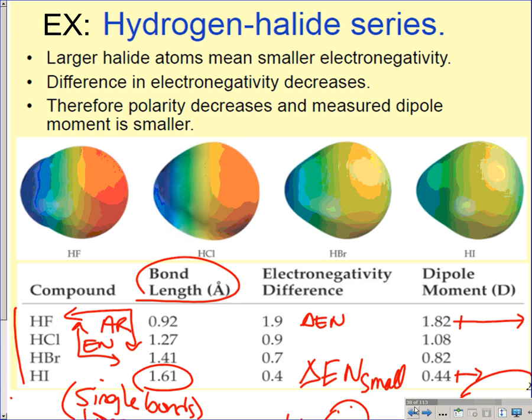The larger the atom, the smaller the electronegativity of that particular atom, which creates a long bond length. The smaller electronegativity difference creates a small dipole moment for the entire molecule. All of these are linear — like HF versus HI — this one has a really large dipole and this one's really small. HF has a high electronegativity difference because of the electronegative nature of fluorine, which creates a bigger dipole moment. A lot of times they'll indicate the size of the dipole moment based on the length of the arrow they draw.